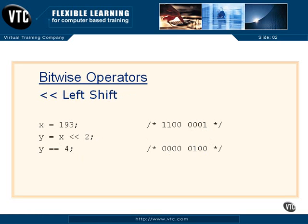Here's the bitwise left shift operator. It shifts our value to the left in binary by a specified number of bits. X is 193, and our new value is X left shifted by two bits. The whole bit pattern shifts left by two, so the two 1-bits at the high end roll off and disappear, and new zero bits are padded in on the right. Our new value is 4. This is used to move bits around, but that's a bitwise left shift.